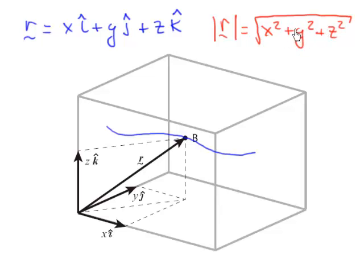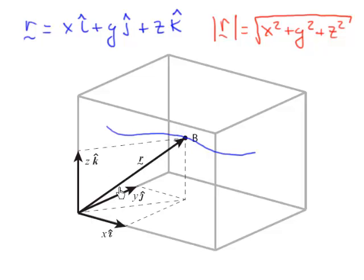If we think about what this means geometrically, that magnitude — the square root of x² + y² + z² — is the distance of my particle, in this case my bumblebee, from the origin of my coordinate system. So this thing we've drawn here makes perfect sense as a vector.